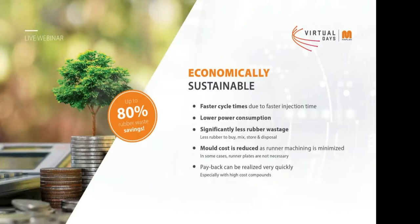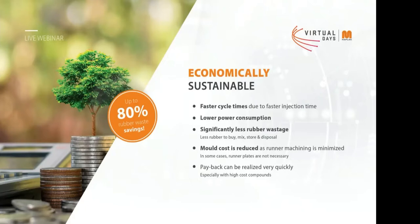The second important point is the economical aspect. We have faster cycle times due to faster injection and filling times with a cold runner block. We have lower power consumption over the complete production cycle. We have significantly less rubber wastage — less rubber to buy, to store, to mix, and ultimately less to dispose of. Mold costs are also reduced because there is less machining required on the mold plates for runners. These points together give a very quick payback, especially for middle or high cost compounds.